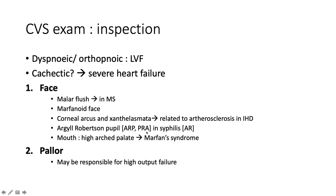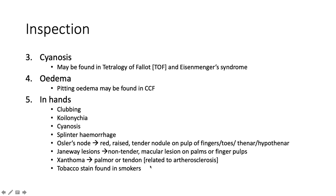Corneal arcus and xanthelasma are strong indications of hyperlipidemia, contributing to atherosclerosis and ischemia. Argyll Robertson pupil — the mnemonic is ARPPRA: accommodation reflex present, pupillary reflex absent — which happens in tertiary syphilis and may indicate associated aortic regurgitation due to dilatation of the aortic root. Pellagra may be responsible for high output failure. Cyanosis may be found in tetralogy of Fallot and Eisenmenger syndrome — examples of cyanotic congenital heart disease. Edema may be found in congestive heart failure, specifically right ventricular failure.